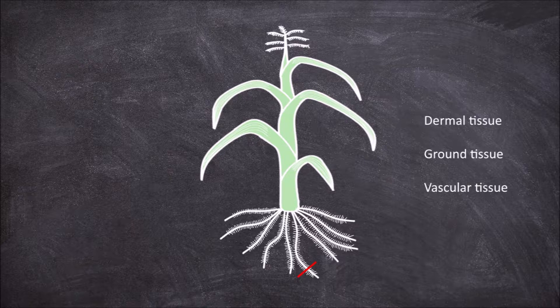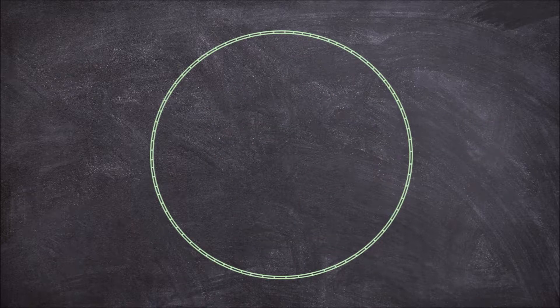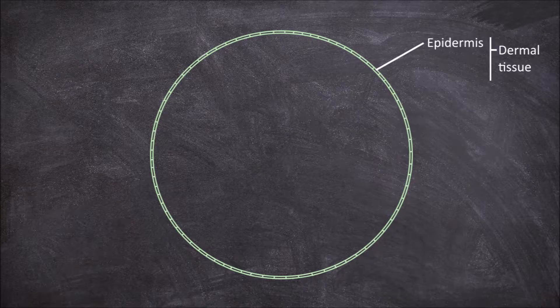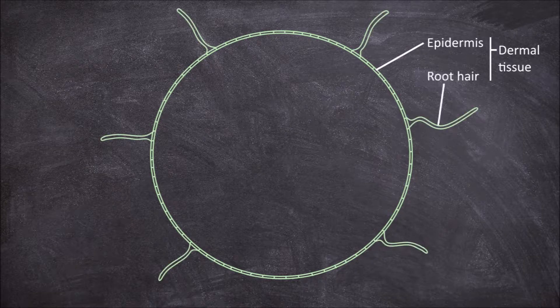If we take a cross section through the root we see the outer layer consists of the epidermis, this is the dermal tissue. The epidermis has tubular extensions forming root hairs.